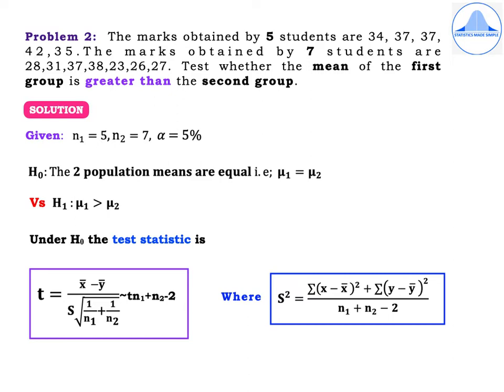Under solution, given N1 = 5, N2 = 7, and alpha is 5% as it is not mentioned in the problem. H0: the two population means are equal, mu1 = mu2, versus H1: mu1 > mu2. This is a right-tailed test because they asked us to check whether the mean of the first group is greater than the second. Under H0, the test statistic is T = (X-bar − Y-bar) / (S × √(1/N1 + 1/N2)), which follows T with N1 + N2 − 2 degrees of freedom.